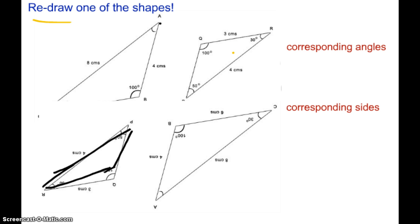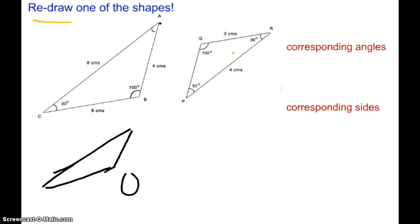But now we just have to label it. So I took Q and Q is now down here and Q measures 100 degrees. R flipped all the way over to here and it now measures 30 degrees. And then P is up here and it measures 50 degrees.